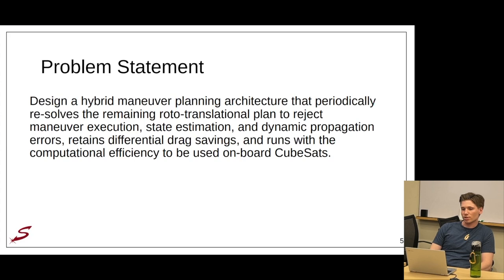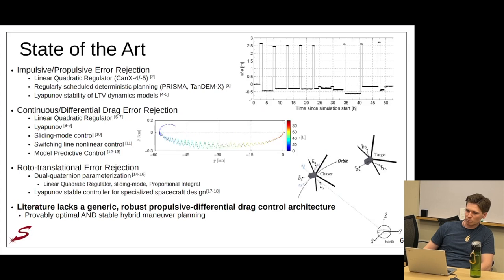So my problem statement is to design a hybrid maneuver planning architecture that periodically resolves the remaining maneuver plan to reject maneuver execution, state estimation, and dynamic propagation errors, retains the cost savings offered by differential drag, and runs with computational efficiency to be used on board CubeSats autonomously.